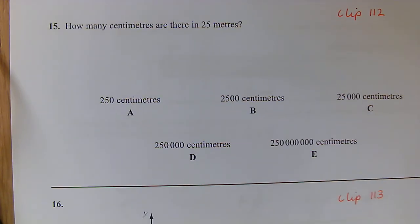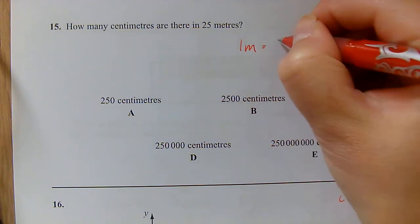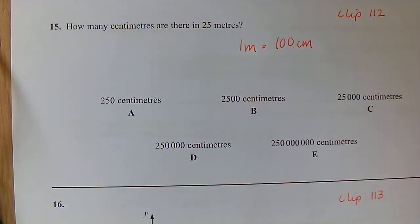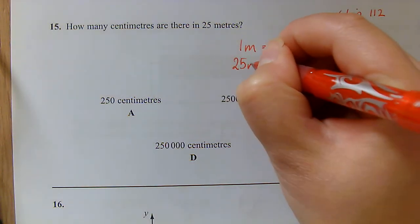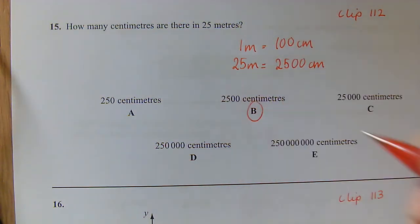Question 15: Converting our metric units. So how many centimeters are there in 25 meters? So we've got to remember that one meter is 100 centimeters. So if I've got 25 meters, that means I've got 2,500 centimeters.